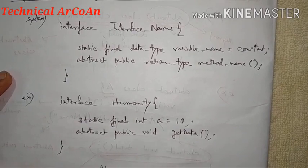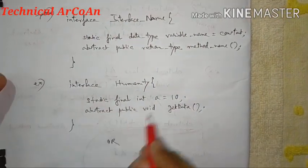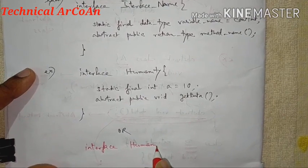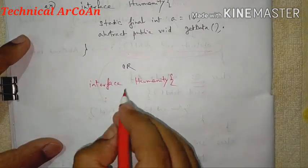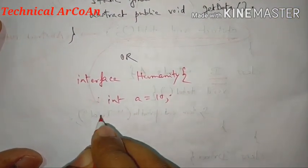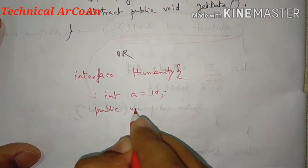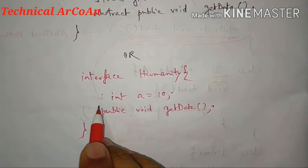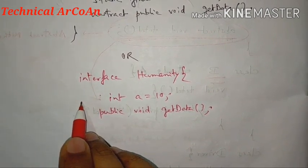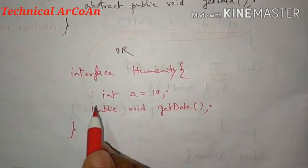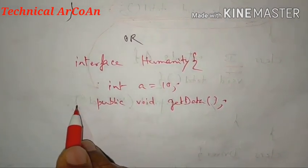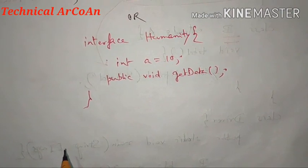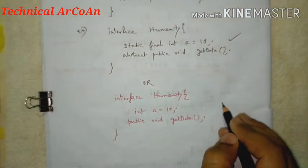We can also define this in a different way. Interface Humanity, with simple int a = 10 and public void getData. That means by default, if we don't write static or final, it is implicitly static final. And if the method is not given abstract, it is implicitly abstract.